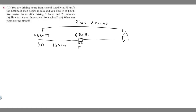In this problem, we're told you are driving home from school steadily at 95 kilometers per hour for 130 kilometers. It then begins to rain and you slow down to 65 kilometers per hour. You arrive home after driving three hours and 20 minutes. Part A asks us to find how far your hometown is from school, and Part B asks what your average speed was.